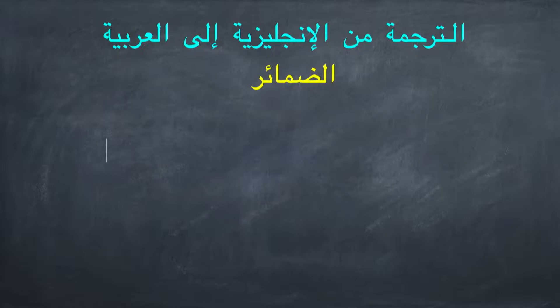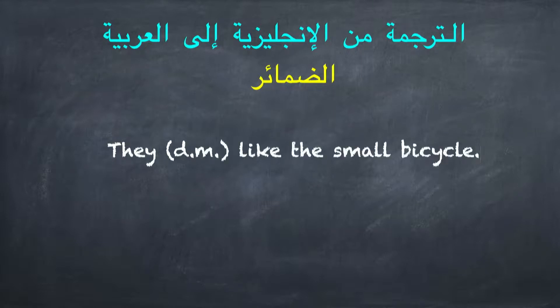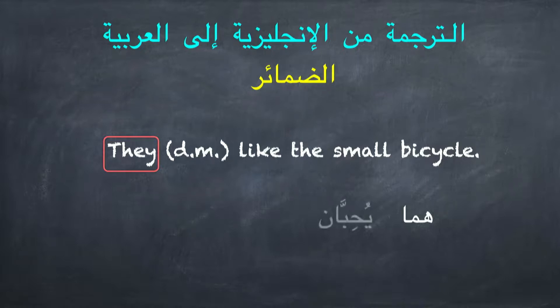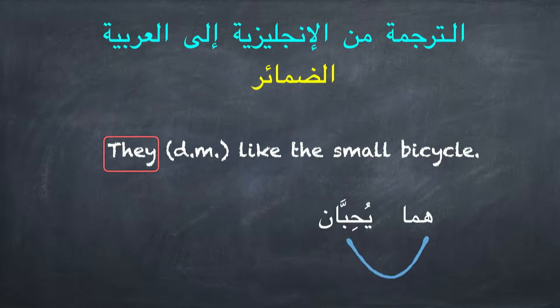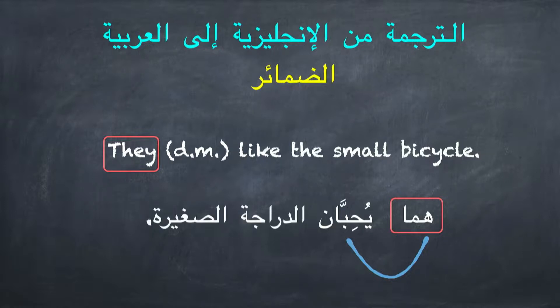هيا بنا أعزائي نترجم جملة أخرى: 'They like the small bicycle'. 'They' = هما. 'Like' = يحبان، يأتي الفعل هنا مثنى لأنه جاء بعد 'هما'. 'The small bicycle' = الدراجة الصغيرة.